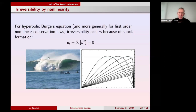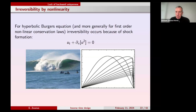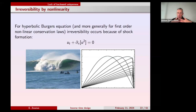Burgers' equation, as a one-dimensional model for fluid dynamics, became very popular in the fifties because of the Hopf-Cole transformation. This transformation allows us to get the solutions of Burgers' equation explicitly out of the vanishing viscosity limit — adding viscosity and then using the Hopf-Cole transform to write the solution of the viscous Burgers' equation explicitly in terms of the Gaussian heat kernel, as a ratio between two heat-like solutions, and then passing to the limit.